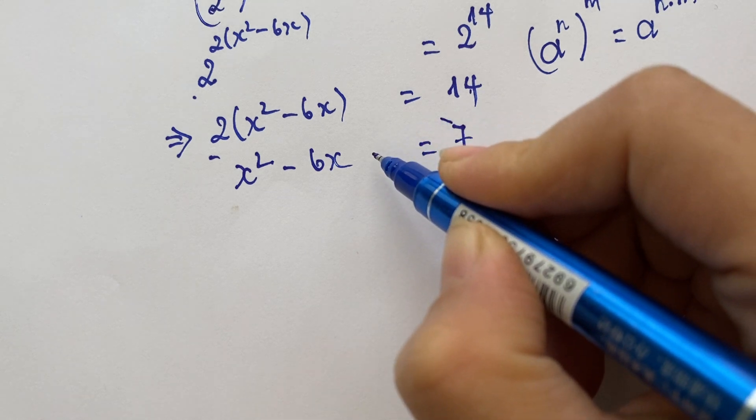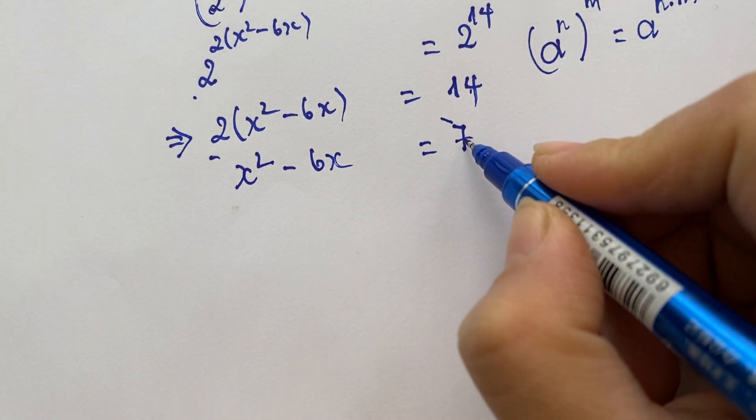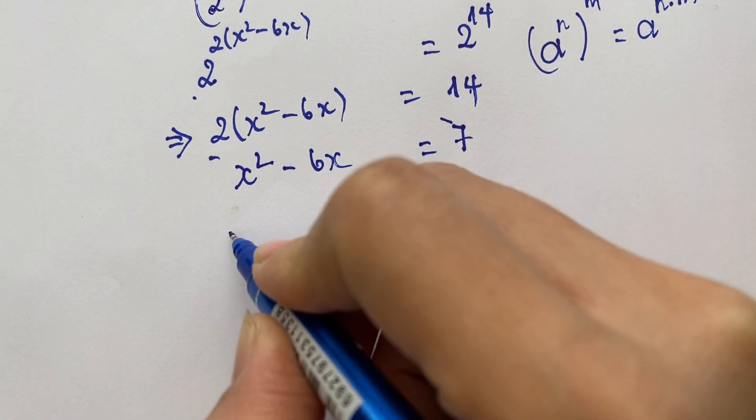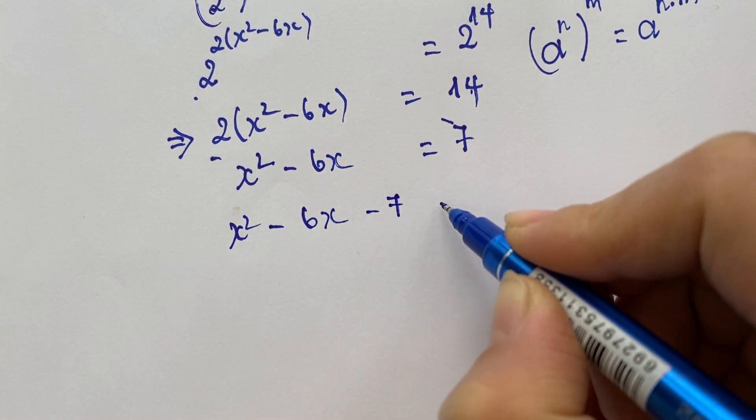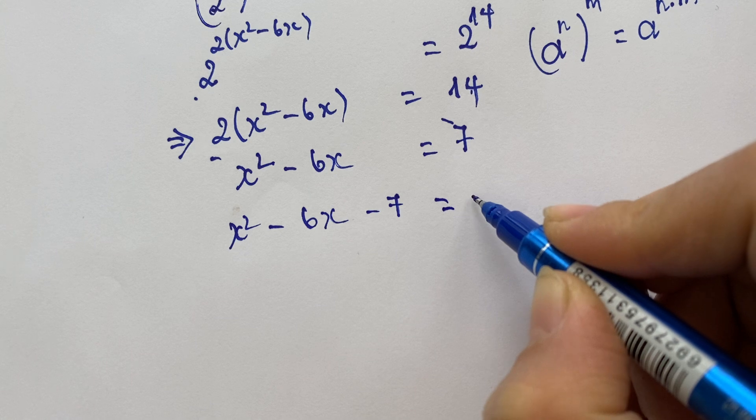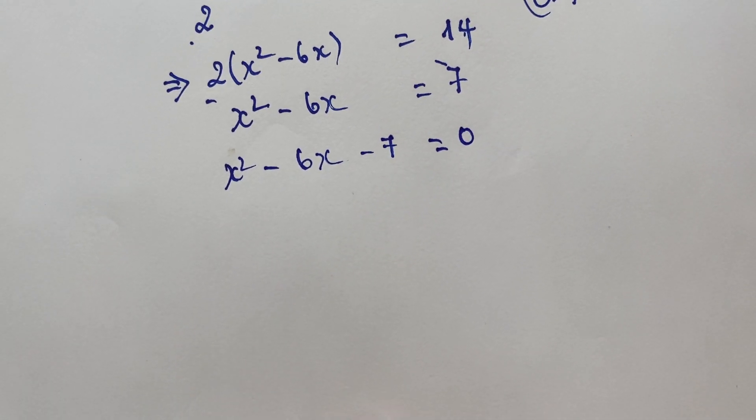Move the 7 to the left hand side and change the sign, so x squared minus 6x minus 7 equals 0.